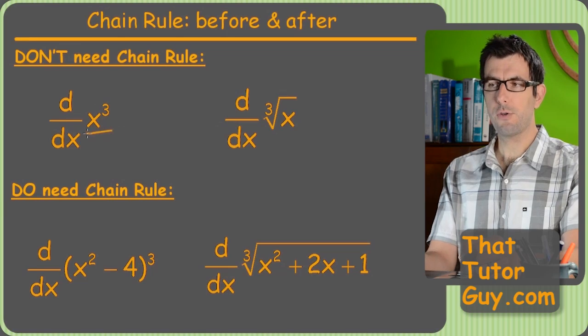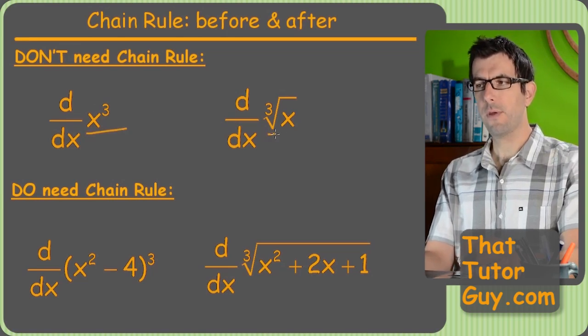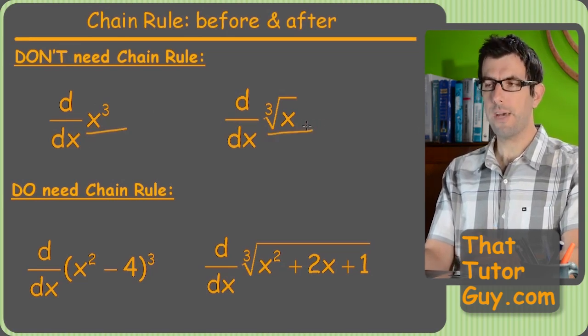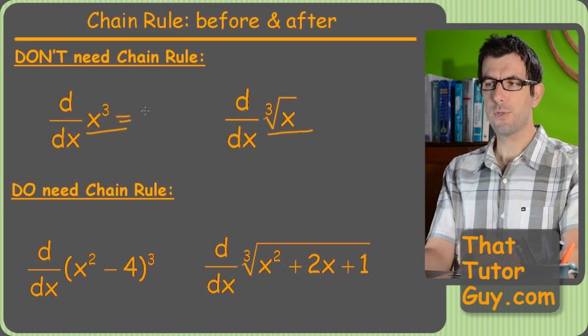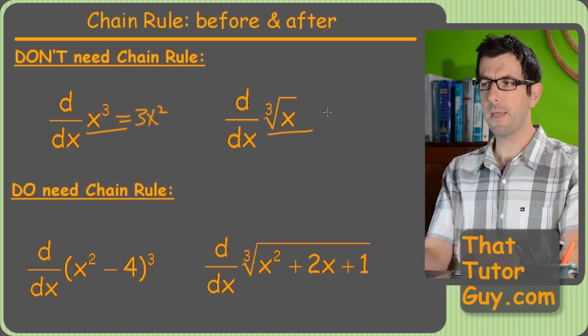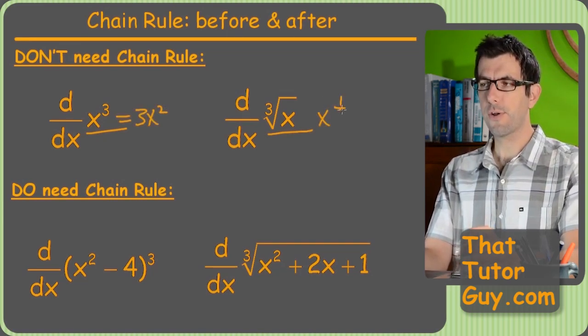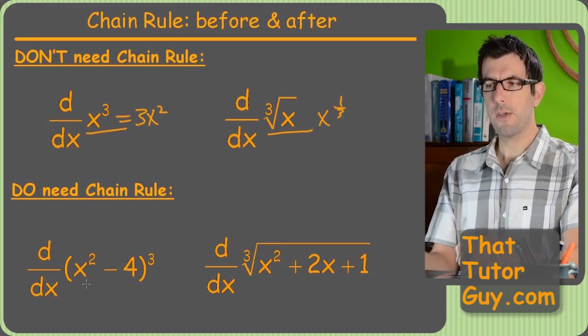You can take the derivative of x cubed. You can take the derivative of cube root of x. And of course this which just would have been 3x squared and this would have been, I don't know, we converted to x to 1/3 blah blah blah. You've seen that in the video. But check this out.